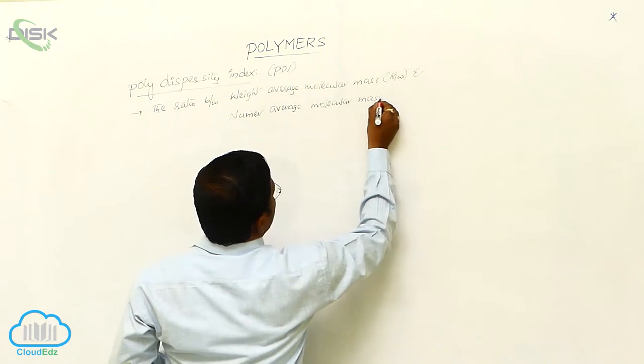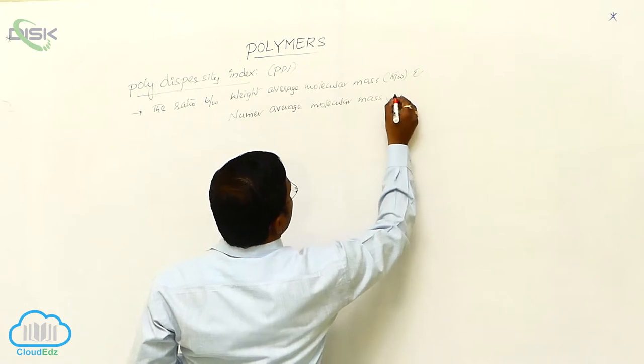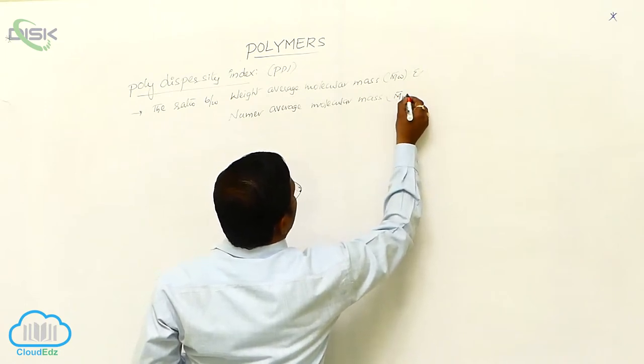So, what is the denoted symbol for number average molecular mass? M bar N.